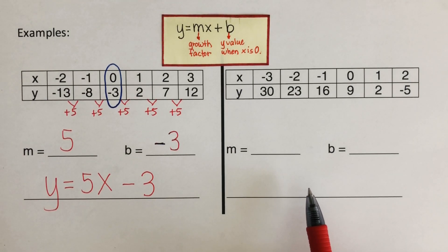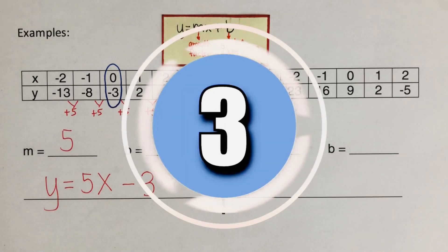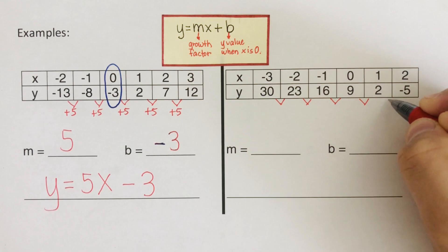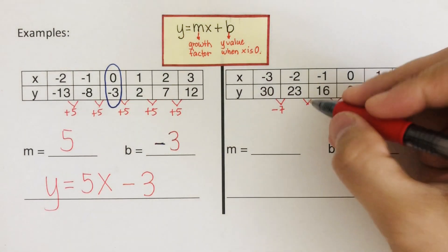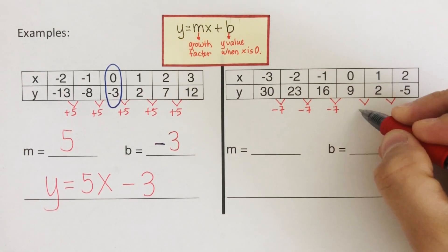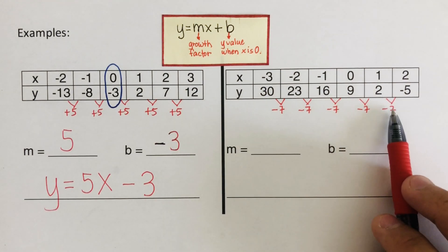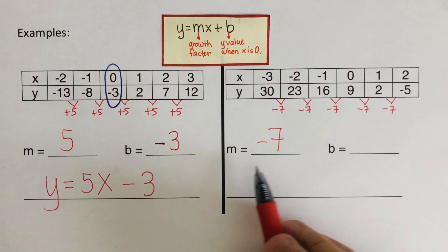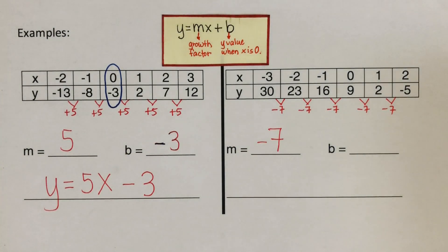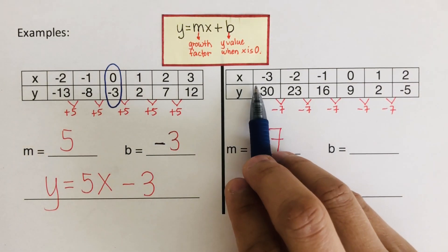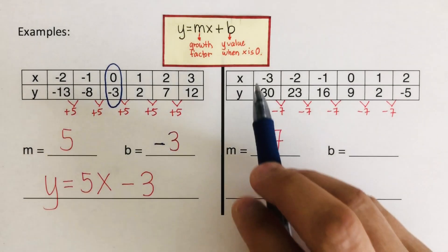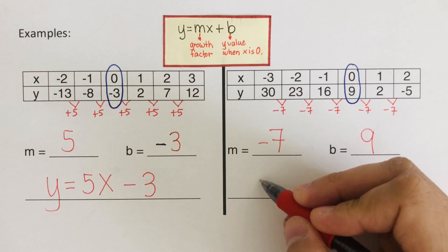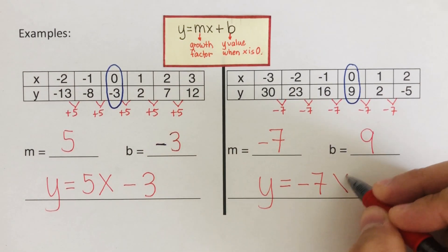Pause the video and try this problem on your own. In the next problem, we are subtracting 7 each time: 30 minus 7 is 23, 23 minus 7 is 16, 16 minus 7 is 9. So the slope m is negative 7. We look for x equal to 0 and find y equals 9 as our y-intercept. The equation is y equals negative 7x plus 9.